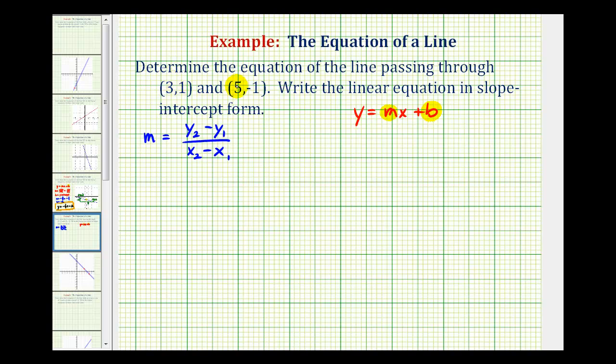Let these be the ones and these be the twos. So, this will be x sub one, y sub one, x sub two, and y sub two. So, we'd have m equals negative one minus one all over five minus three. So, we're going to have negative two divided by positive two, which is equal to negative one.